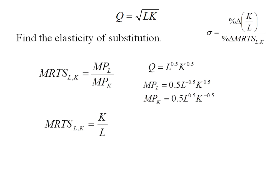Well, this looks like the capital labor ratio, and when I plug in, I'm going to have the percent change in K over L divided by the percent change in K over L. Well, that's going to cancel, and I'm going to have a sigma of 1.